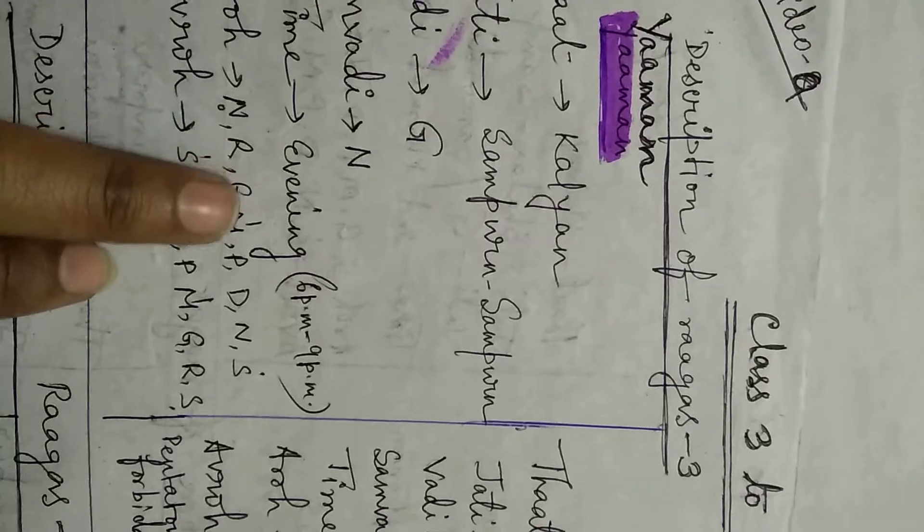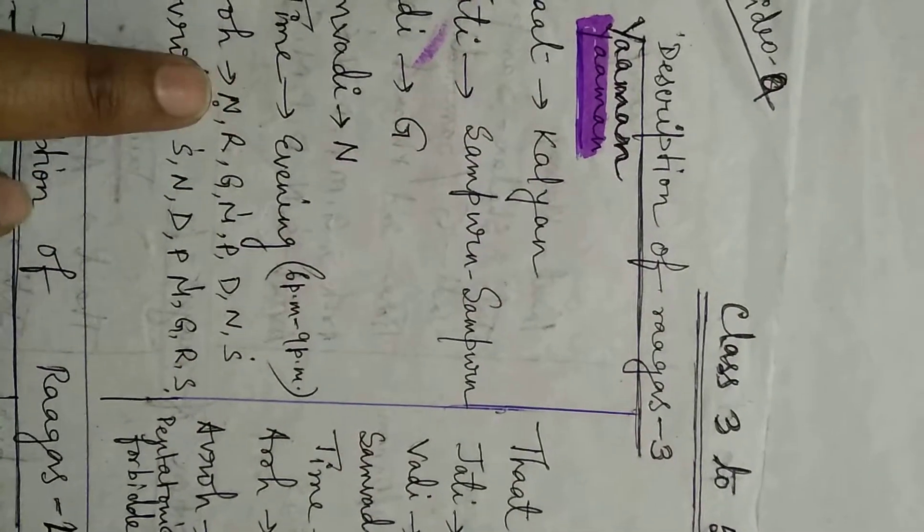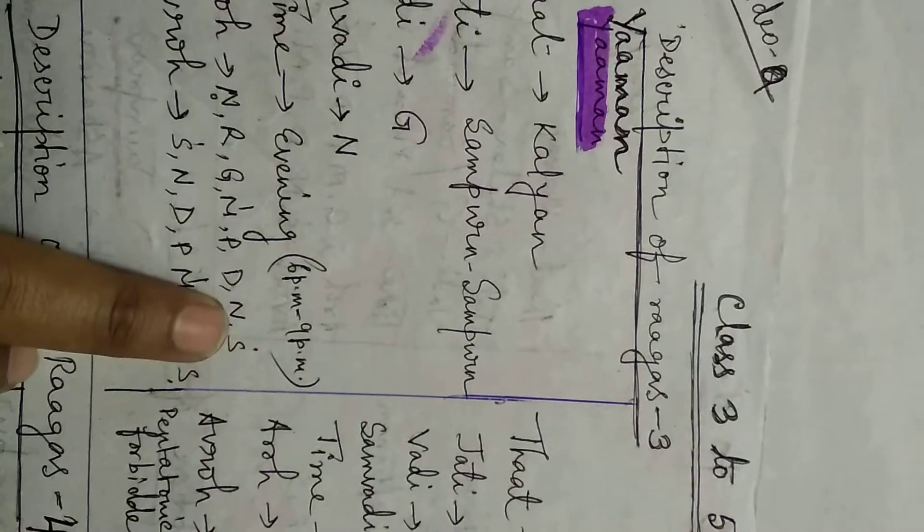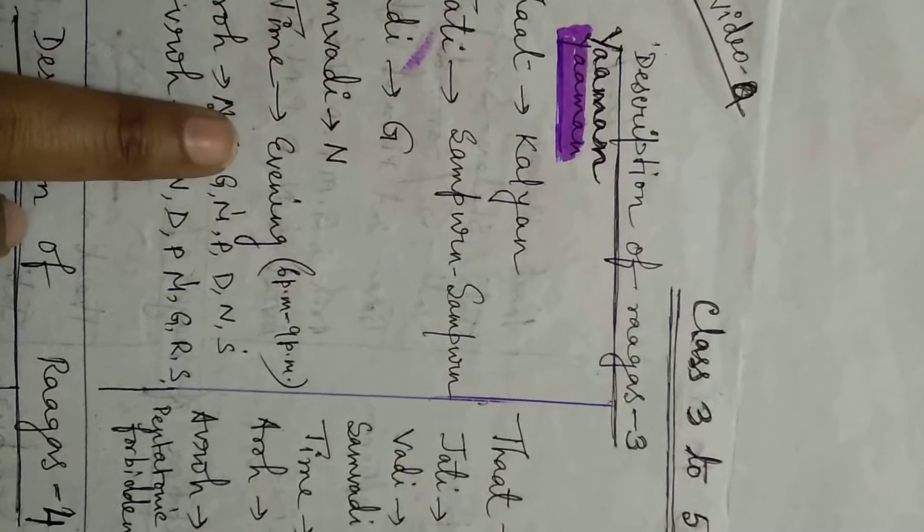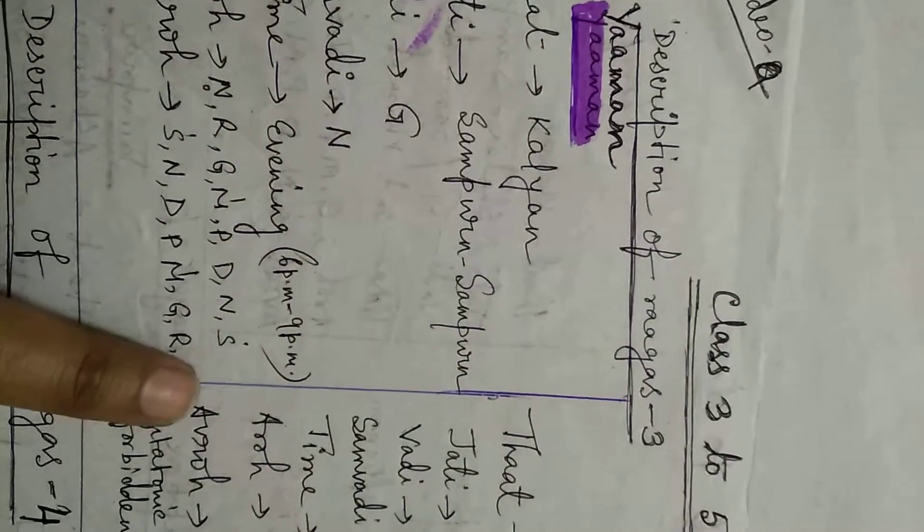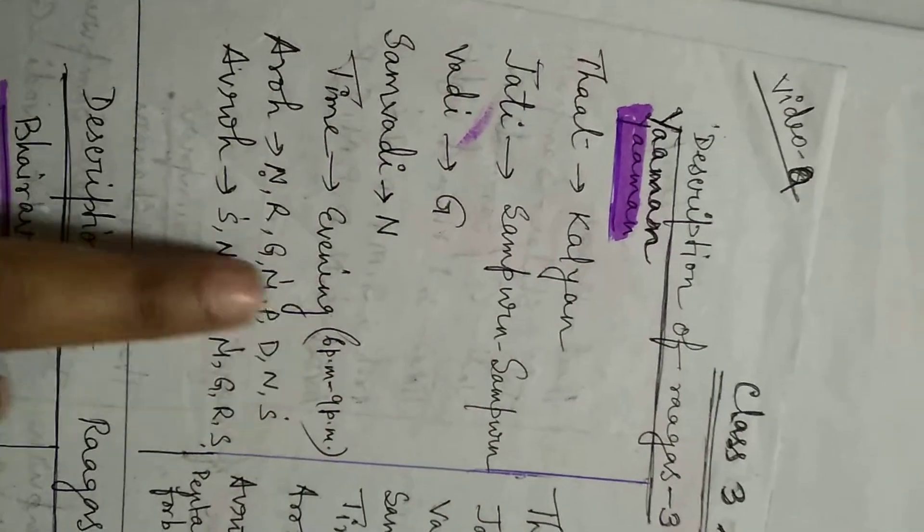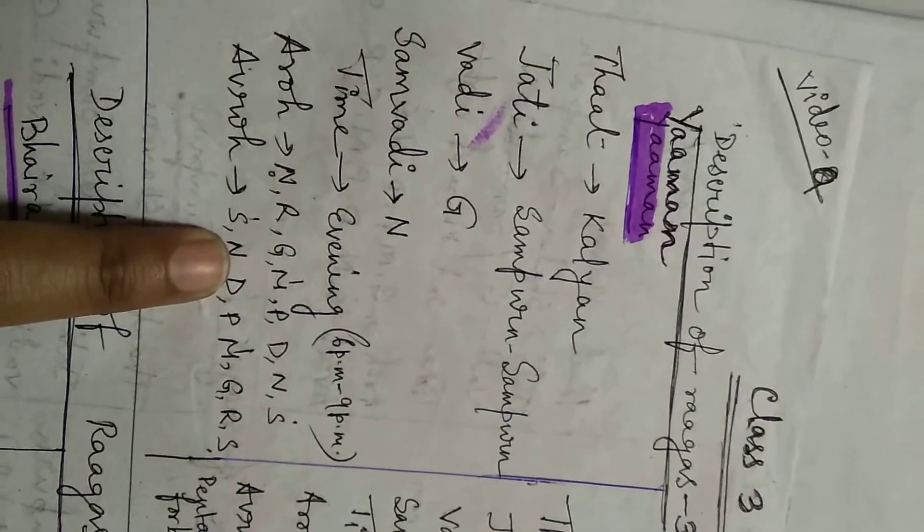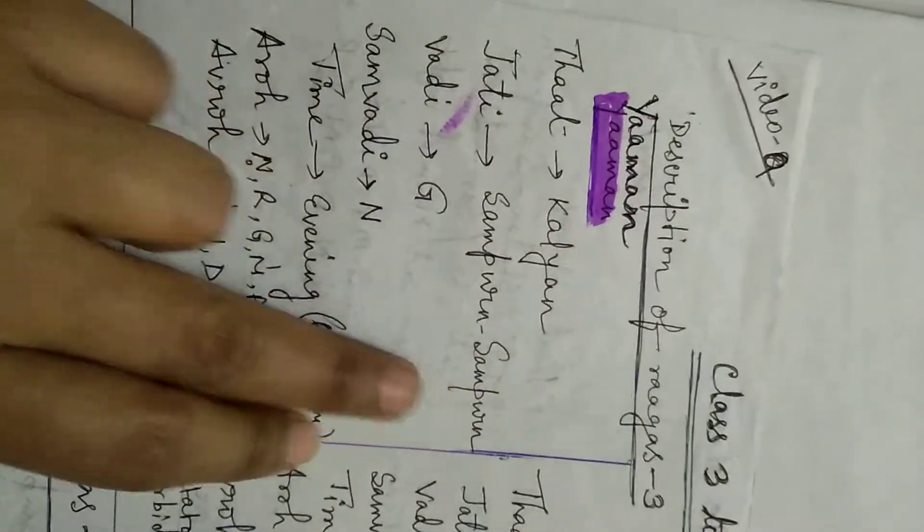One, two, three, four, five, six. This is the repetition of this ni, so this will not be counted again. And sa. So one, two, three, four, five, six, seven. All seven notes are used in aro and avro both. So the jati of this rag is sampoorni sampoorni.